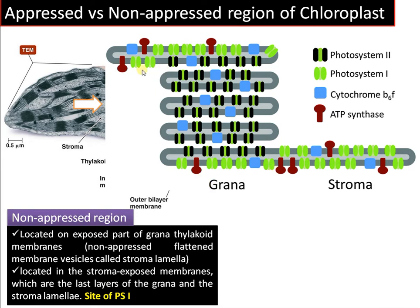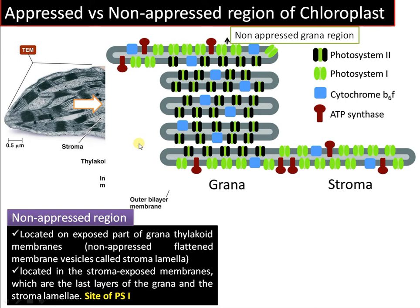Photosystem I is also located on the stroma lamellae — the thylakoid membrane that connects adjacent grana — which is called the stroma lamellae, and that is also facing towards the stroma. This is the non-appressed region.